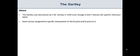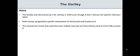Scott Carney assigned the specific retracements of the B point and D point to it. The retracement levels that yield the most reliable reversals are the 61.8 at the B point and the 78.6 at the D point.